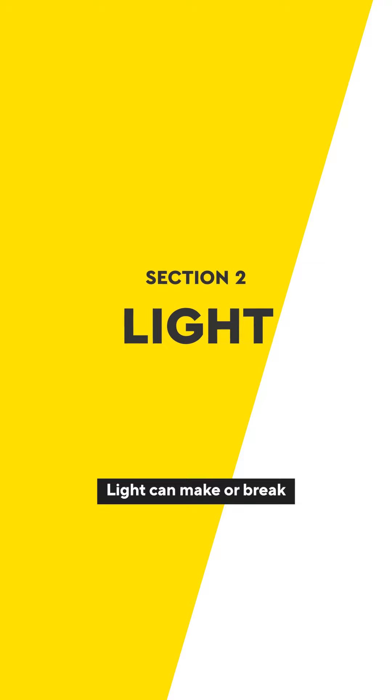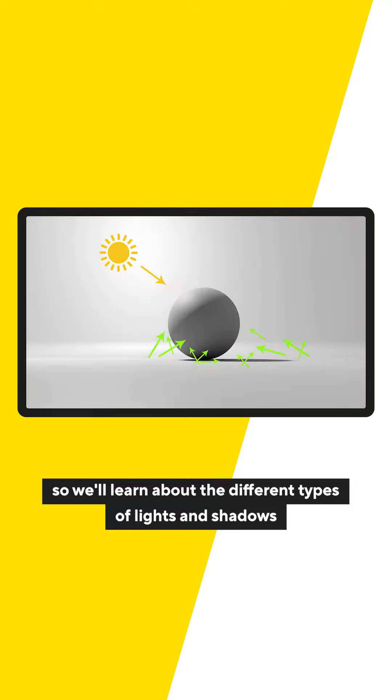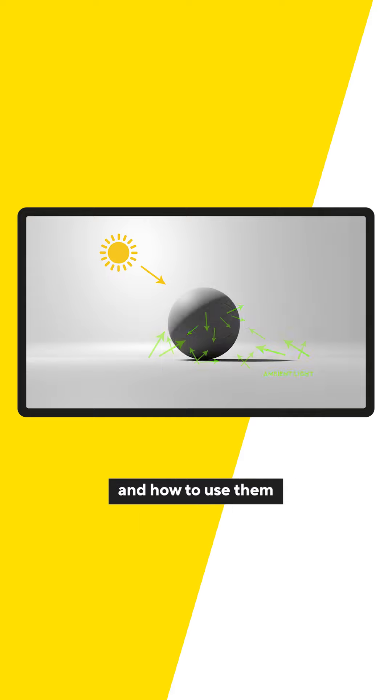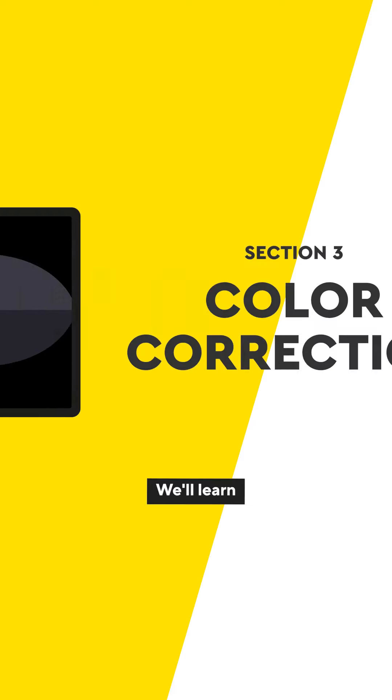Light can make or break a photo composite, so we'll learn about the different types of lights and shadows and how to use them and paint them correctly.